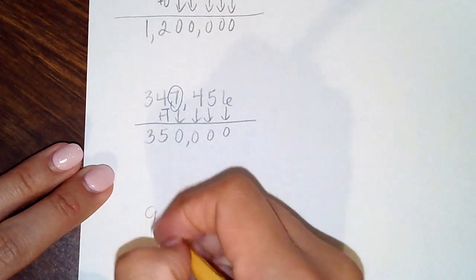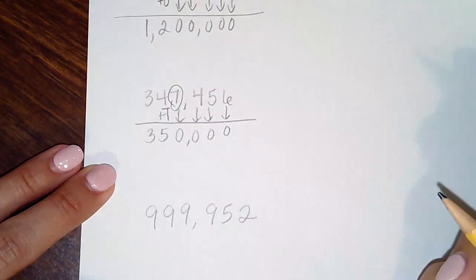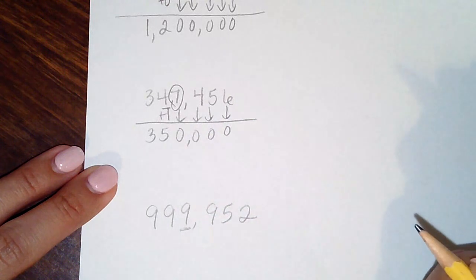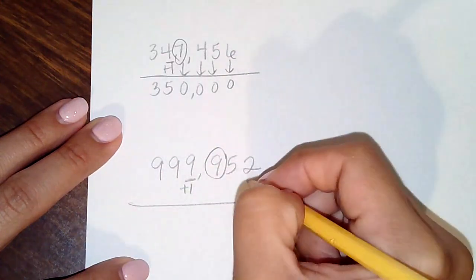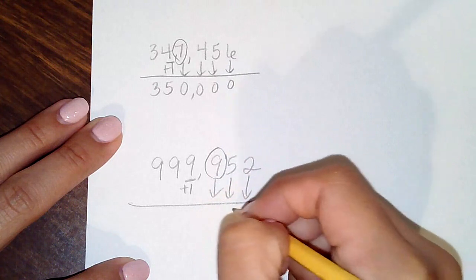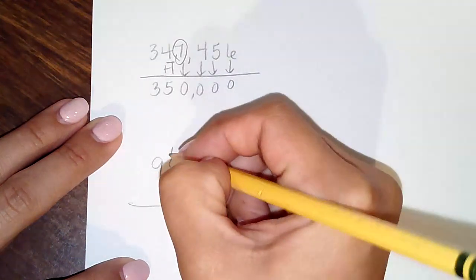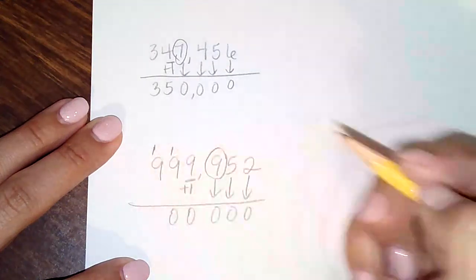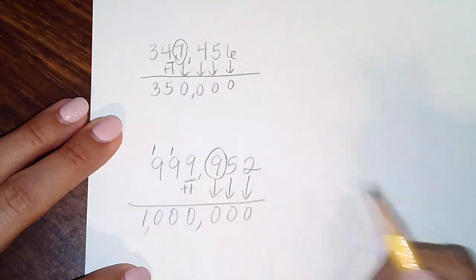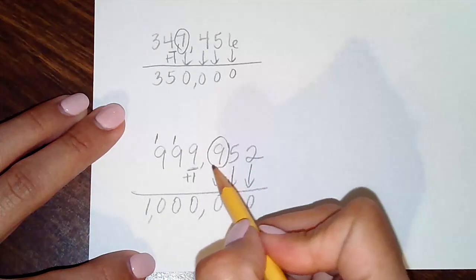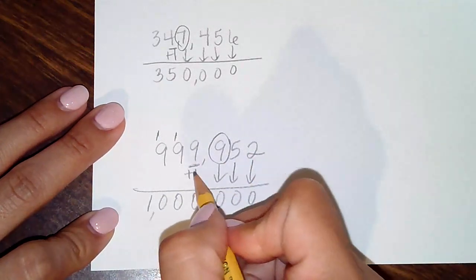What if you have a number like nine hundred ninety-nine thousand, nine hundred fifty-two and they want you to round to the nearest thousands place? Nine is a big boss, so it tells that nine to add one. Nine plus one is ten — you carry your one. Nine plus one is ten again — you carry your one again. Even though they wanted you to round to the nearest thousands place, because they were all nines it carried all the way up to the millions place. Be careful with those — that's why I like to add the one and carry my numbers.